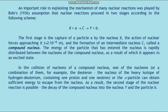An important role in explaining the mechanism of many nuclear reactions was played by Bohr's 1936 assumption that nuclear reactions proceed in two stages: X + A → C → Y + B. The first stage is the capture of a particle by nucleus X — the action of nuclear forces at an approach distance of approximately 2×10⁻¹⁵ m — and the formation of an intermediate nucleus C called a compound nucleus.